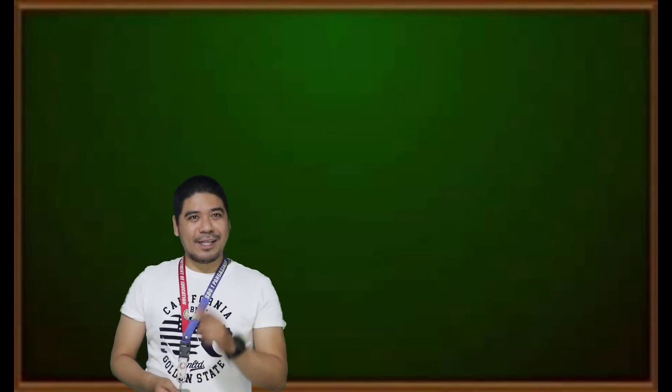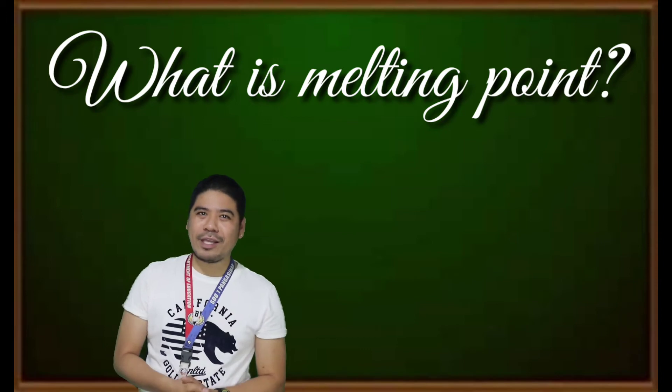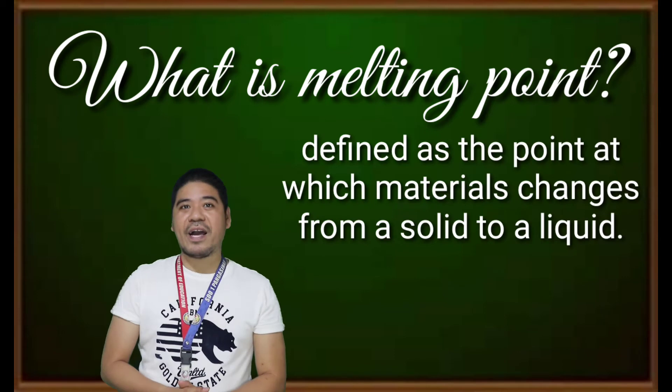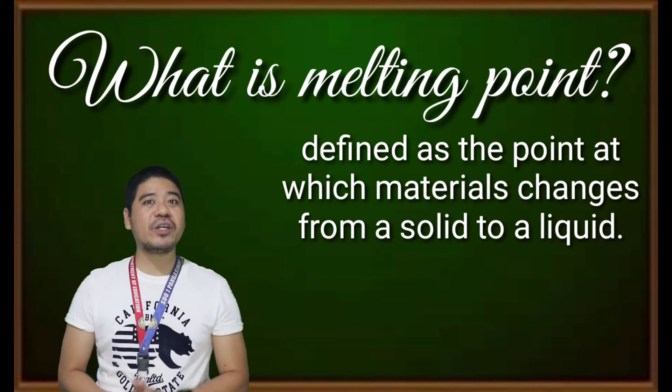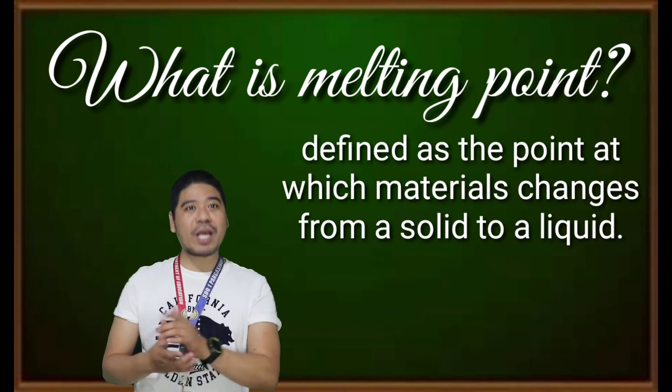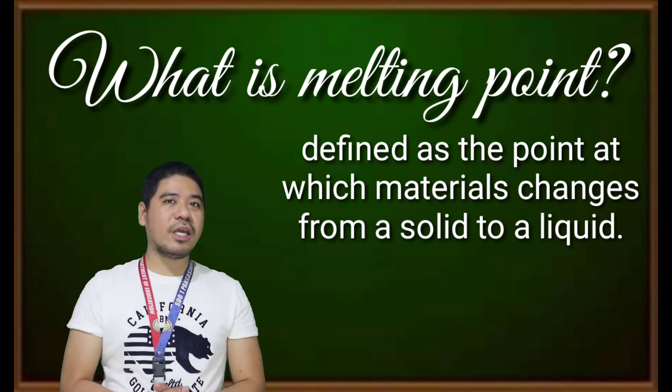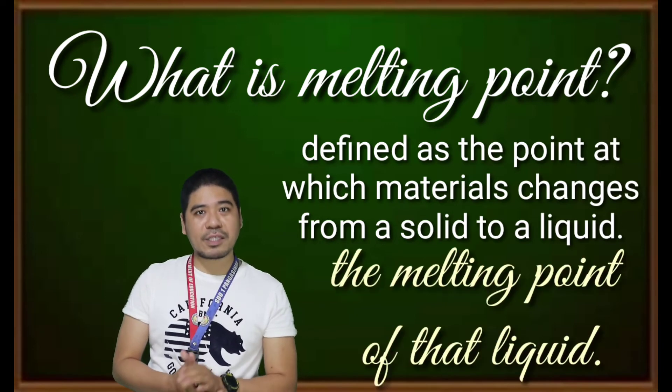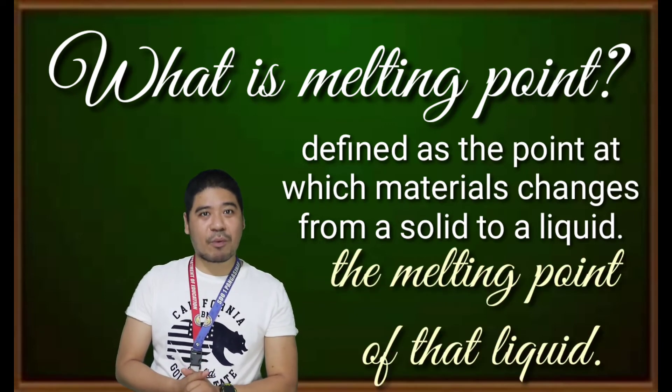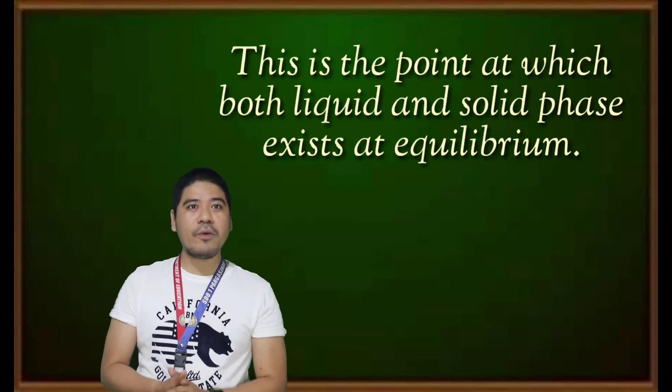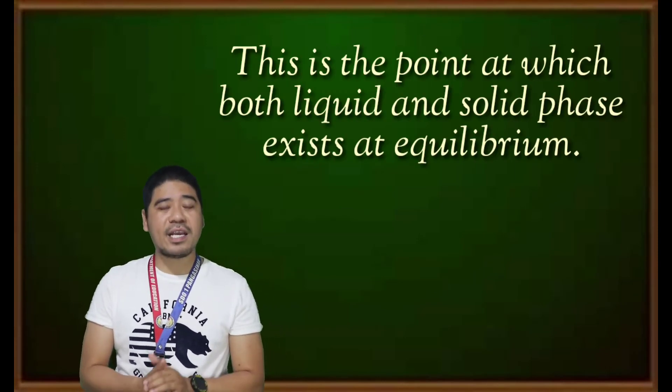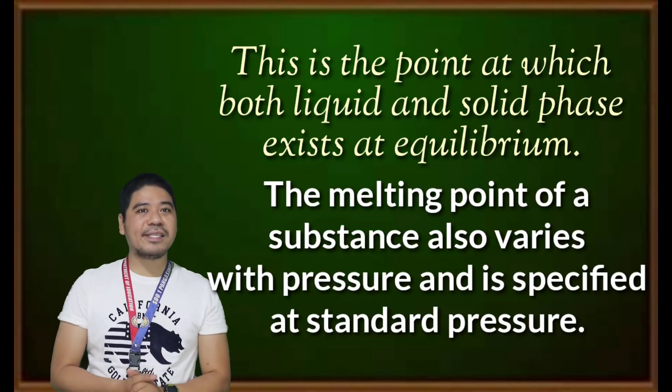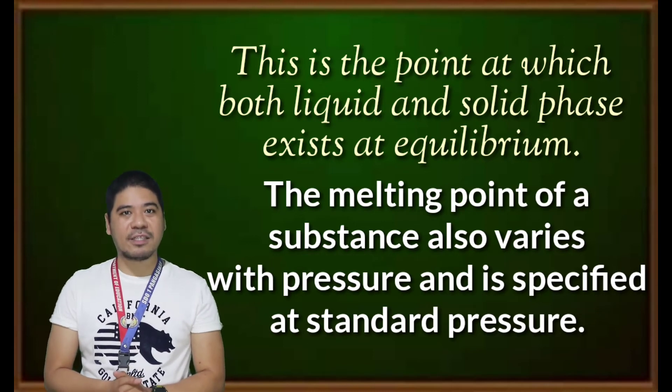And now, let's discuss melting point. What is melting point? The melting point is usually defined as the point at which materials change from a solid to a liquid. The temperature at which solid changes its state to liquid at atmospheric pressure is called the melting point of that liquid. This is the point at which both liquid and solid phase exist at equilibrium. The melting point of the substance also varies with pressure and is specified at standard pressure.